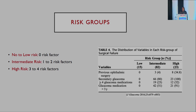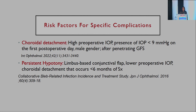When stratifying and explaining expected outcomes to patients, it is useful to club these risk factors and then prognosticate. A 2016 study showed that with no or low risk factors the outcome is good, and as the number of risk factors increases, it becomes more difficult. Regarding specific complications: choroidal detachment risk factors include high preoperative IOP, IOP less than 9 on the first post-op day, male sex, and penetrating glaucoma surgery. Persistent hypotony is more likely with a limbus-based conjunctival flap, lower preoperative IOP, or choroidal detachment occurring within six months of surgery.